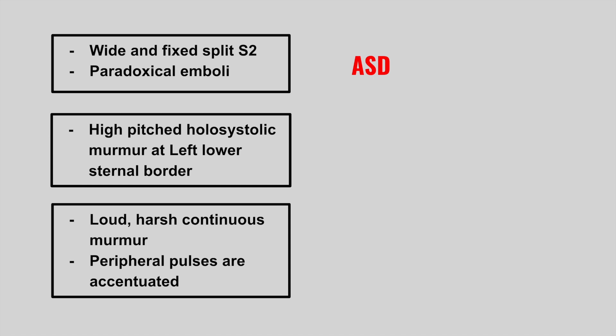The second one is someone with a high-pitched holosystolic murmur at the left lower sternal border — this is a ventricular septal defect. The next one is a loud harsh continuous murmur with accentuated peripheral pulses — this is a patent ductus arteriosus.